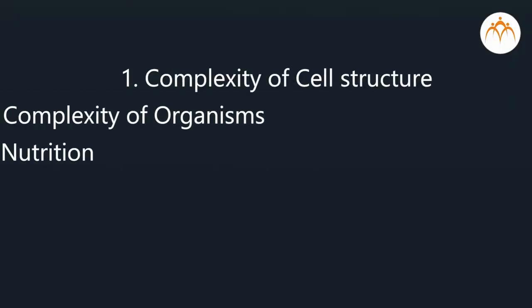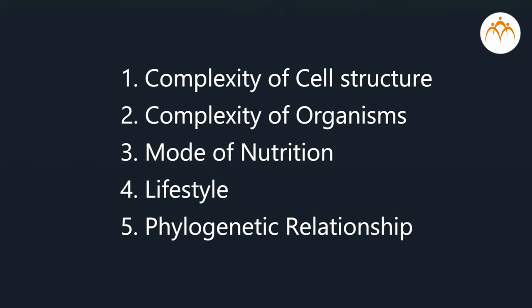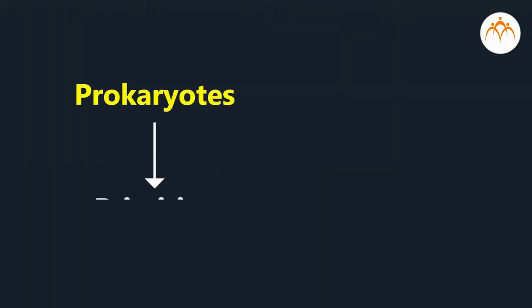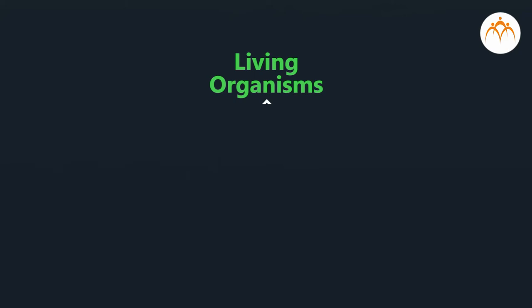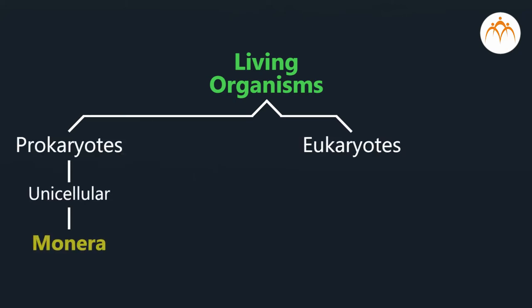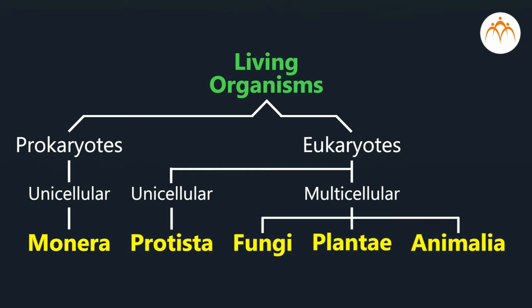The fifth and last parameter is phylogenetic relationship. It tells us about primitive and advanced organisms. So students, finally, we will have a look at the groups made by Whitaker based on the five criteria just mentioned earlier.